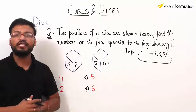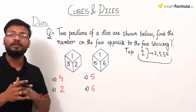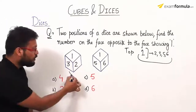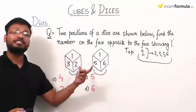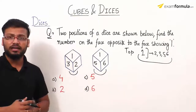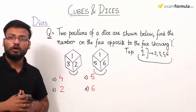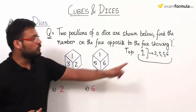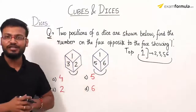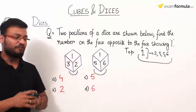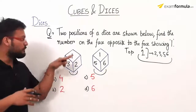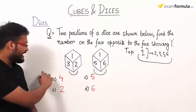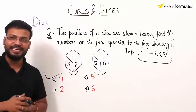One face will be left out — the face opposite to number 1, which will be on the bottom and will not appear in either figure. The only number left out is number 4. So the face opposite to number 1 is number 4. Your correct and final option is option A.